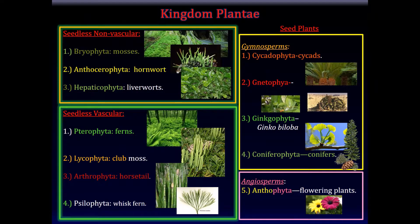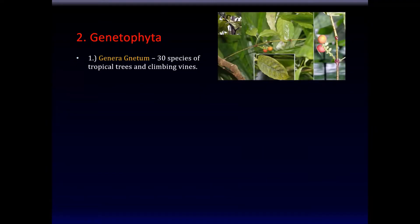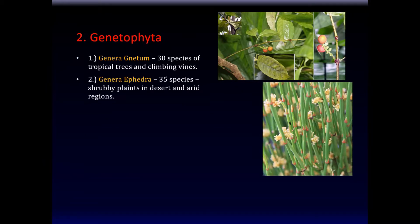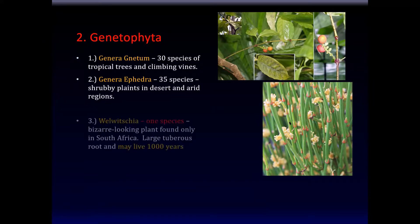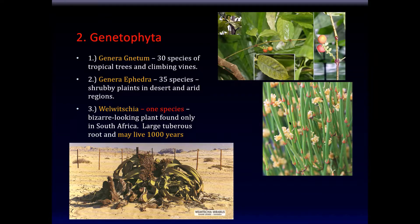The second category of plants are the Gnetophyta. Among the Gnetophyta, there is the genus Gnetum — apparently some 30 species of tropical trees. They look quite beautiful, although I'm not sure I could recognize one if I saw one. The second genus is Ephedra — some 35 species of shrubby plants in desert and arid regions. And the third genus, which I hope I get a chance to see someday, is the Welwitschia. Apparently there's only one species of this plant left. It's a bizarre-looking plant found only in southern Africa, with large tuberous roots, and may live up to a thousand years.